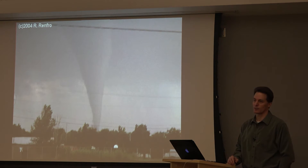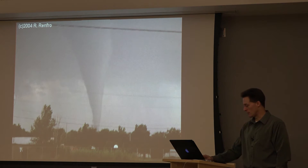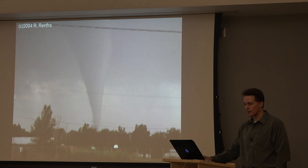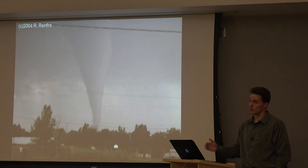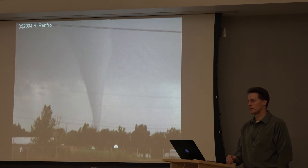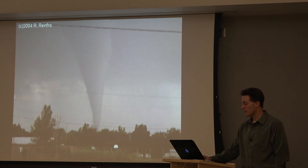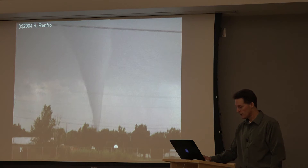Non-mesocyclone tornadoes don't always look like little dirt whirlies — this one produced F2 damage and unfortunately sat over a farm for about 15 minutes. I'll be honest: this was a case where I issued a severe thunderstorm watch early in an evening shift and perhaps didn't give the environment enough credit. It was a strong tornado in a severe thunderstorm watch with some wind and hail reports. It shows you can't come in with a preconceived notion and ignore the actual environmental evidence. This is a fairly repeatable pattern you'll see in the central United States, sometimes two or three times in a warm season.